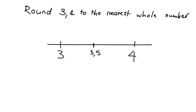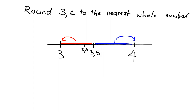Anything in this section below 3.5 will be closer to 3 than to 4, and anything above 3.5 will be closer to 4 than to 3. And that's all we need to do to round. Where is 3.4? Well, 3.4 sits over here — it's below 3.5, so it will be rounded down to 3.